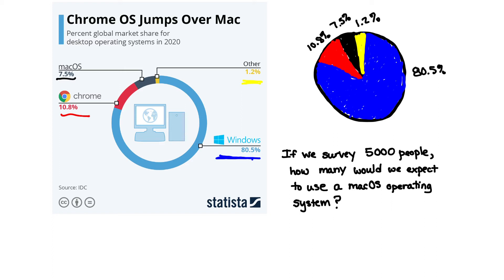If we survey 5,000 people, how many would we expect to use Mac OS? Well, the first thing we need to do is see what percentage of the pie the Mac OS operating system takes up. The Mac operating system takes up 7.5%. So we would say that the Mac operating system takes up 7.5% of the whole pie. If 5,000 people are surveyed, then that whole pie represents 5,000.